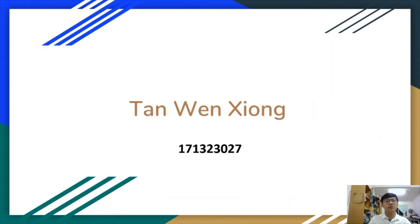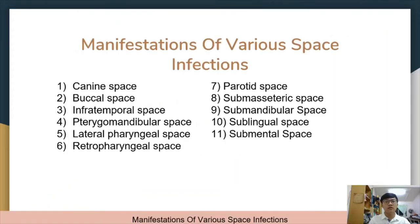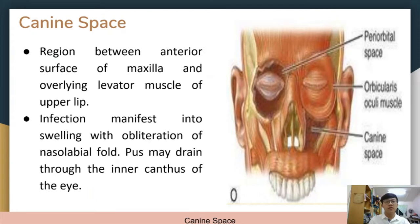I'm Wen Xiong, and I'm going to talk about a few of the space infections. First up is the canine space. It is located between the anterior surface of the maxilla and the overlying levator muscle of the upper lip. When there is an infection in this space, it will lead to swelling with obliteration of the nasolabial fold — the smile line. Pus may drain through the inner canthus of the eye.